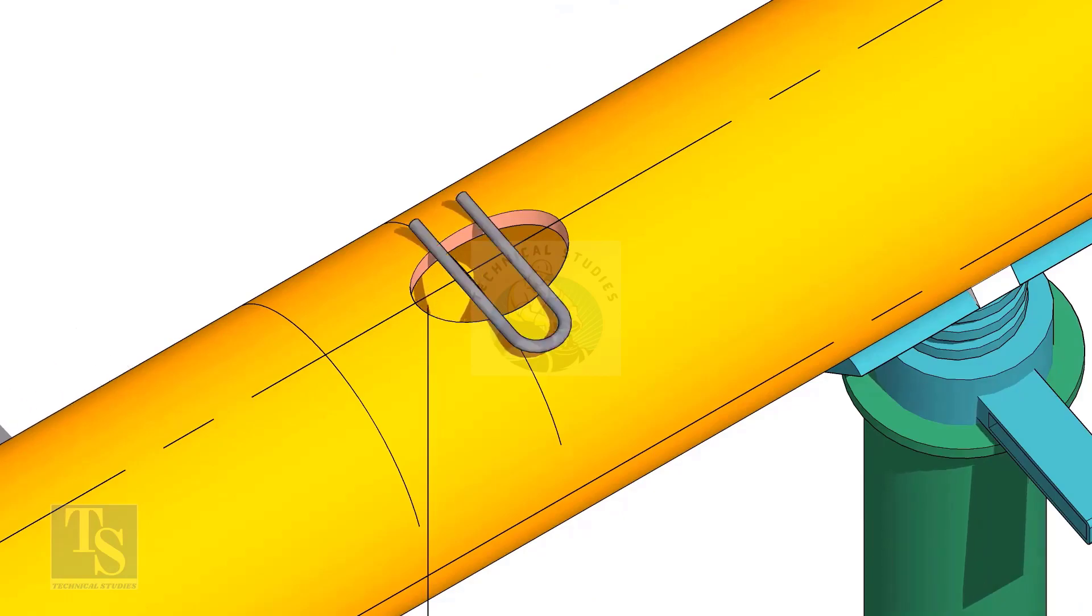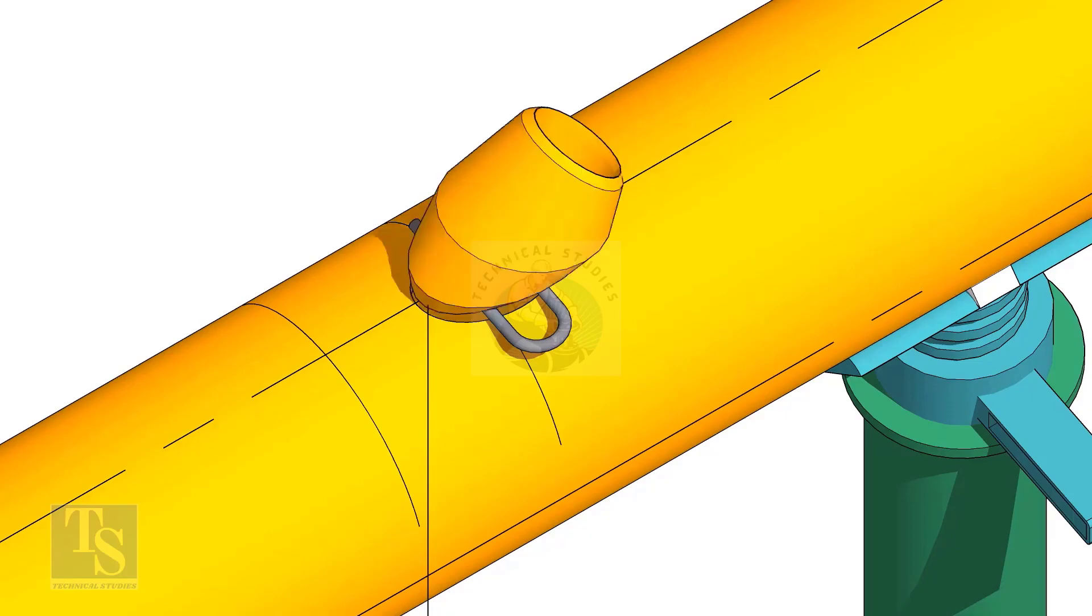Cut and clean the opening on the header. Put the laterolette on the center of the hole.